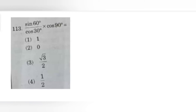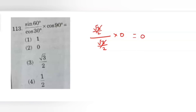Question 113: sin 60 by cos 30 multiplied by cos 90. Sin 60 equals root 3 by 2, cos 30 also equals root 3 by 2, and cos 90 equals 0. Root 3 by 2 cancels in numerator and denominator, and multiplying by 0 gives simply 0. The answer is 0. Option 2 is the correct one.